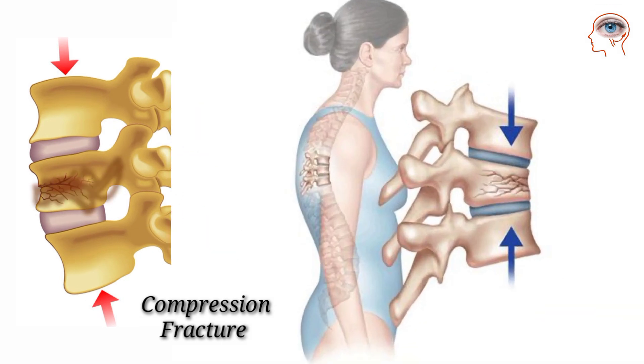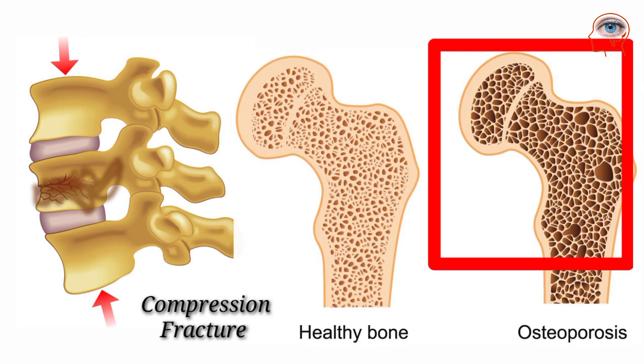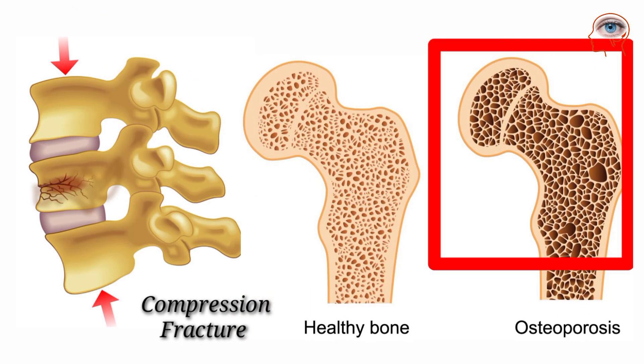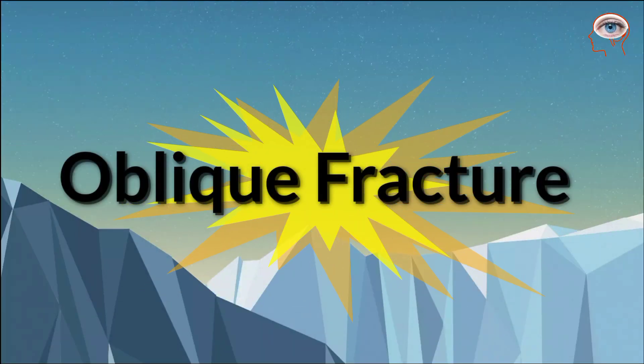Compression fracture: when bones are crushed, this is called a compression fracture. It occurs in the spine and causes your vertebrae to collapse. Osteoporosis is the most common cause of compression fractures.